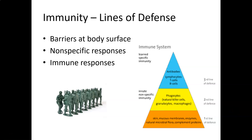We'll continue the second part of the systems and homeostasis lecture with immunity. Immunity is how we keep our body free from disease, and there's a series of lines of defense that allows us to be free of pathogens, viruses, fungi, and protozoans. Most of you will probably end up taking microbiology, so you'll learn more about them there. Let's look at the three basic lines of defense.